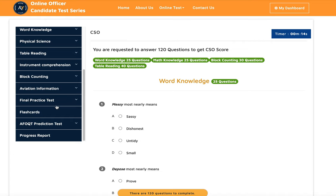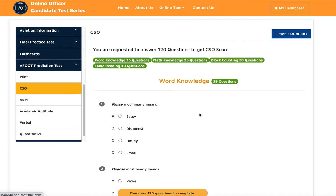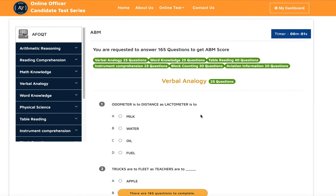The next one we have is ABM, Air Battle Manager's composite. This composite is based on your skills in verbal analogy, word knowledge, table reading, instrument comprehension, block counting, and aviation information.